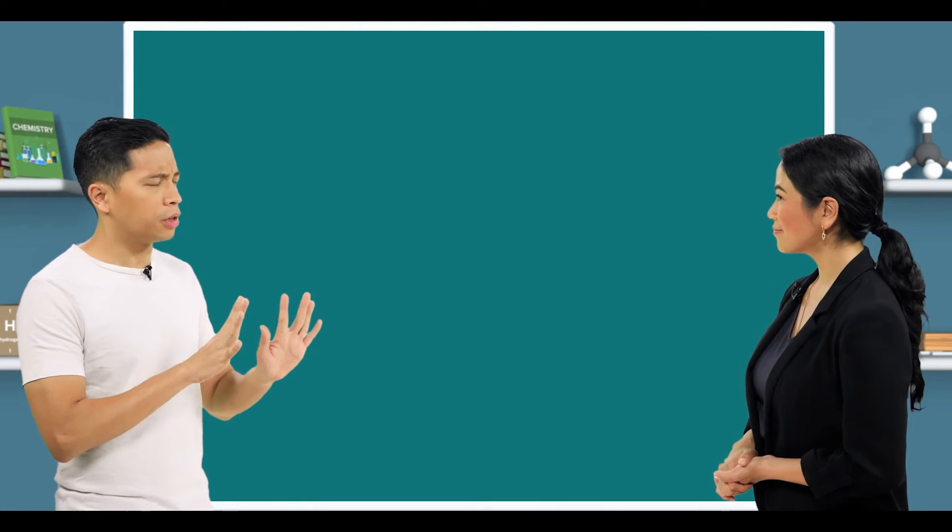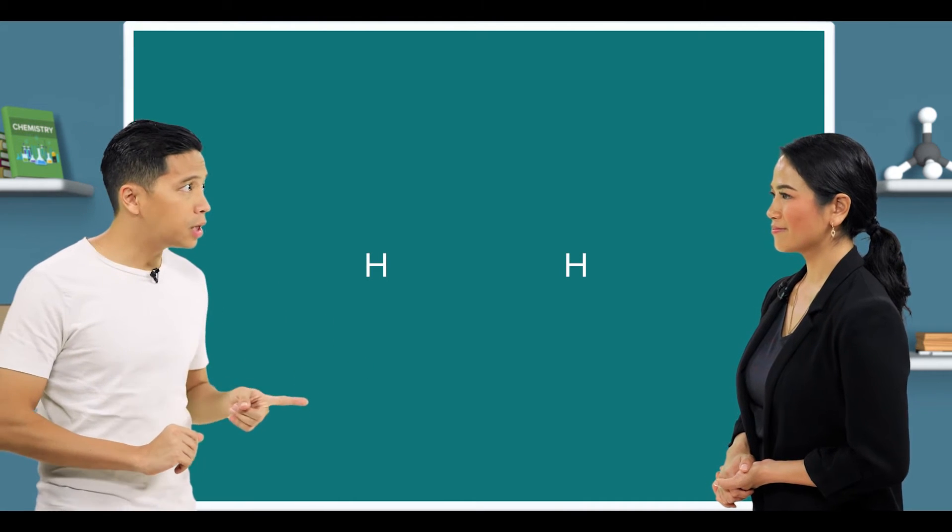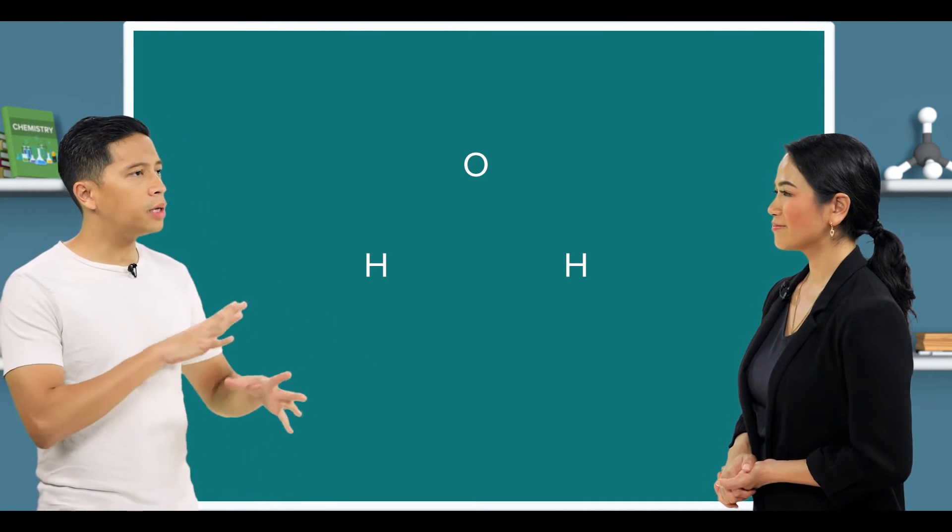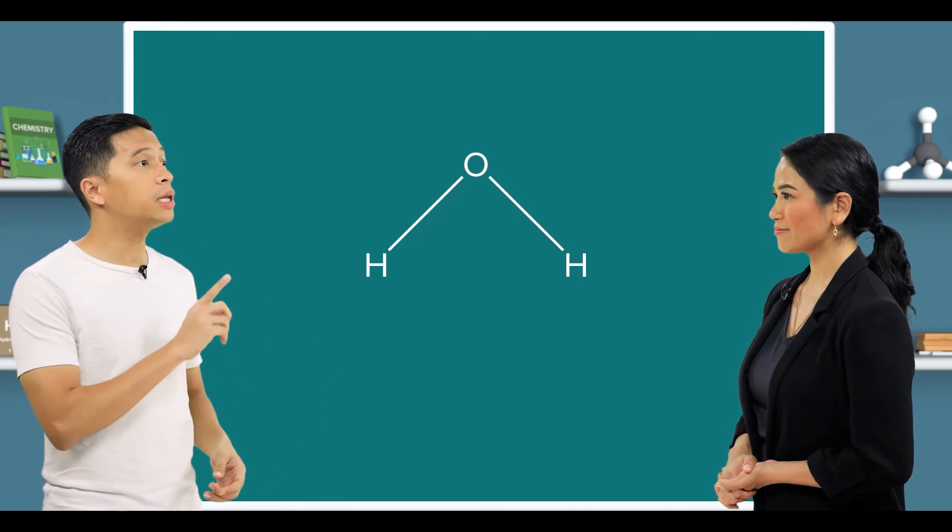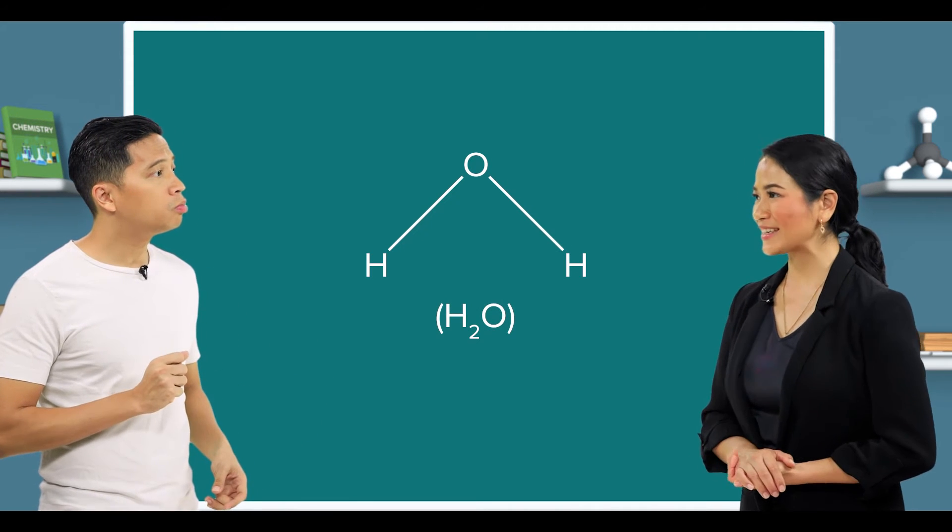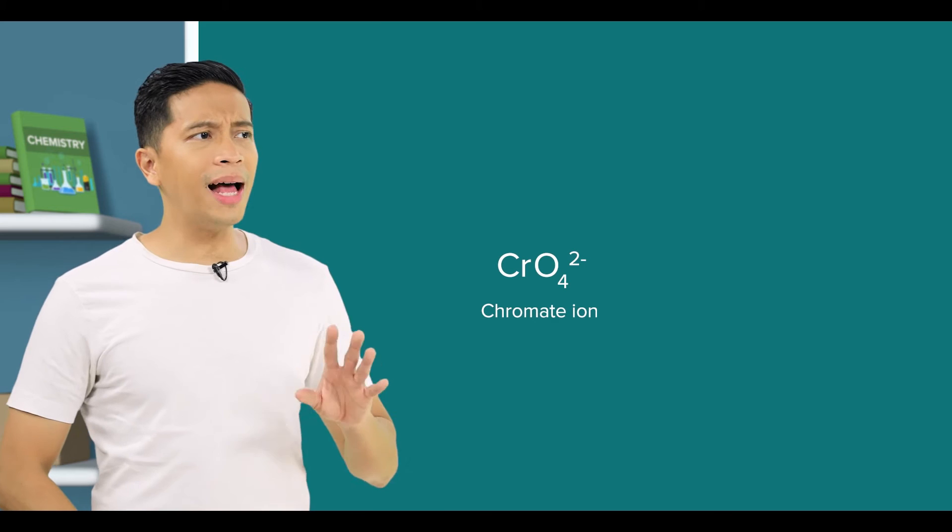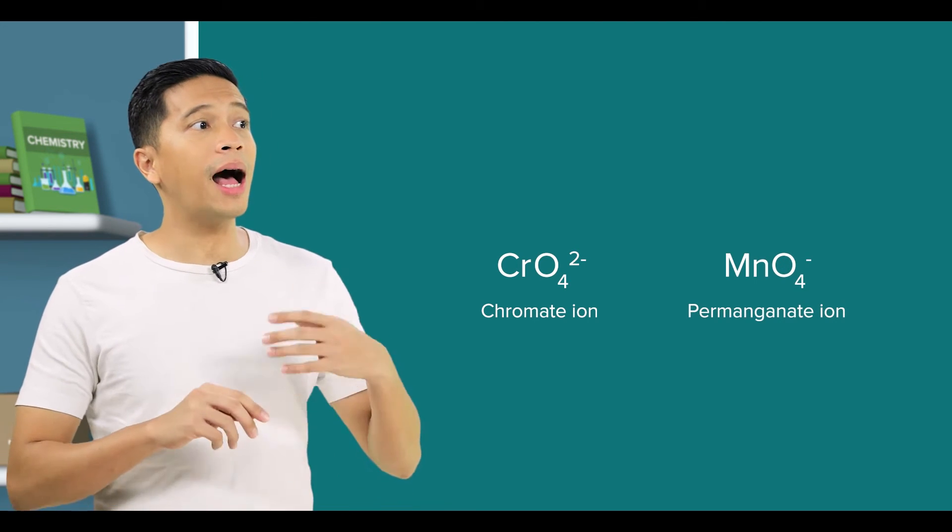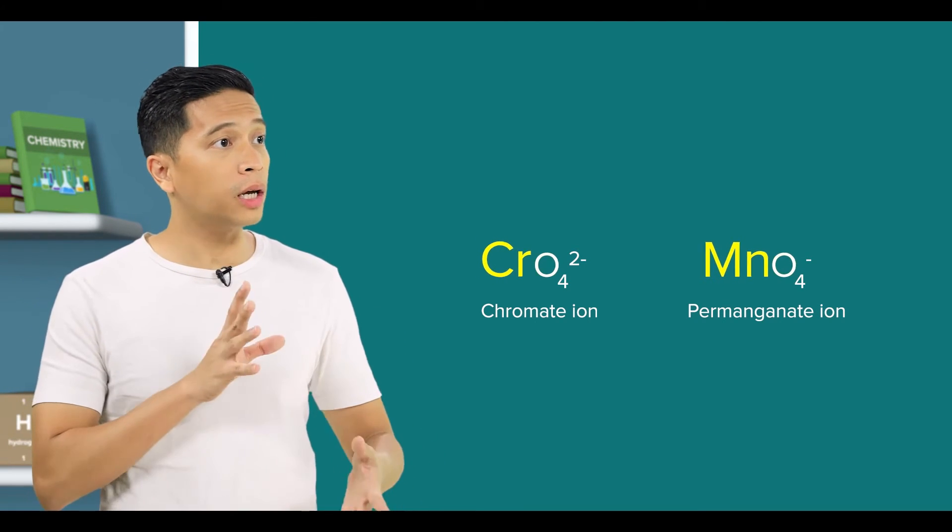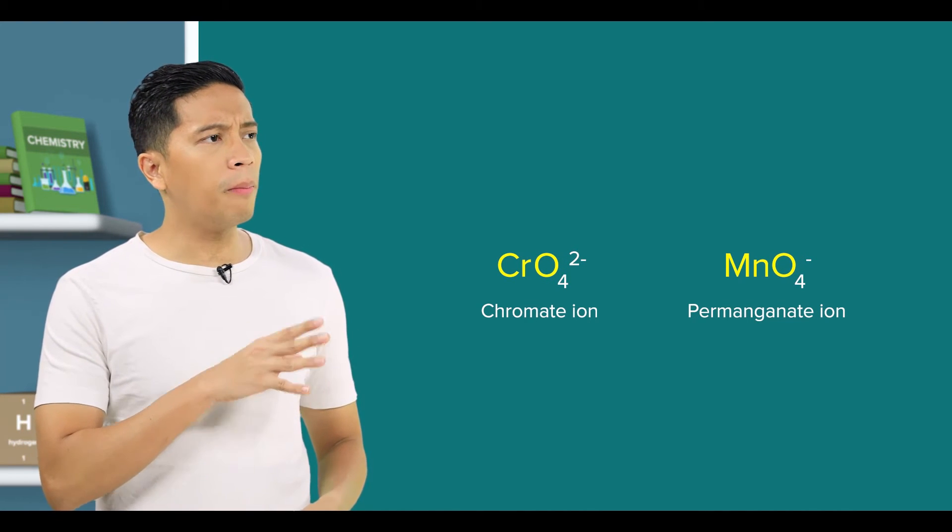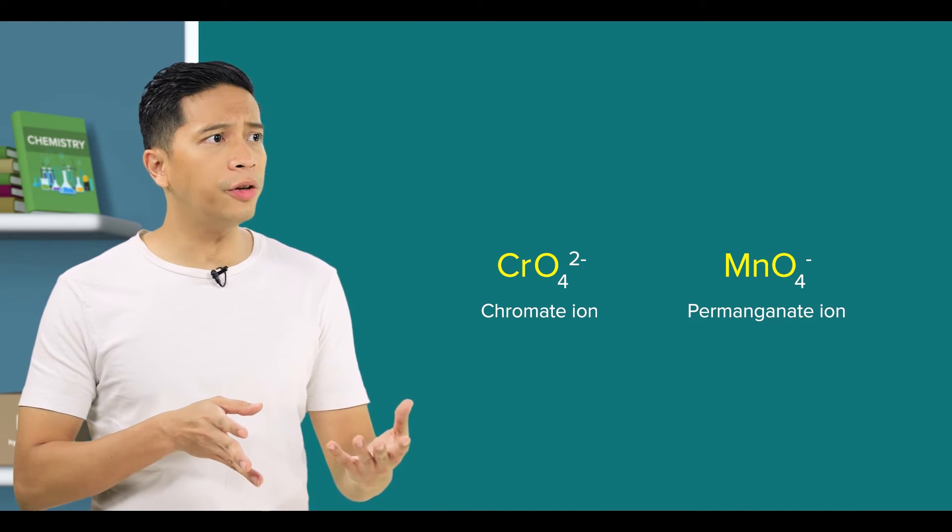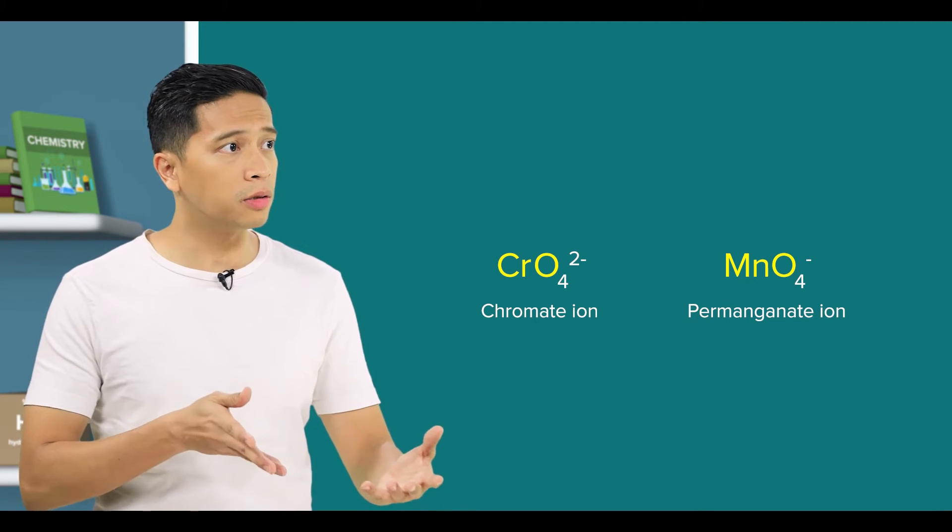Hang on there, teacher. You said previously that covalent bonds occur between non-metal elements, right? Like hydrogen and oxygen forming a covalent bond resulting in H2O. That's right. But chromate ion and permanganate ion are compounds between metals and non-metals. I thought that metals and non-metals only form ionic bonds, right?